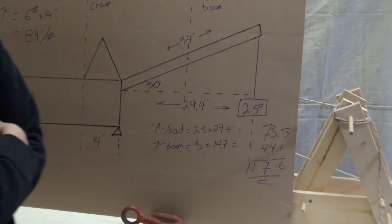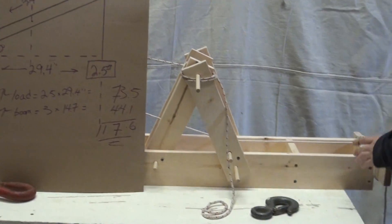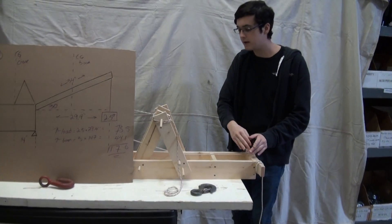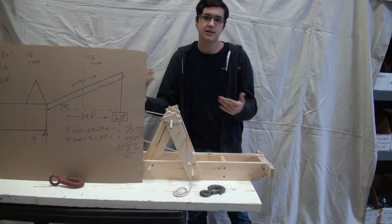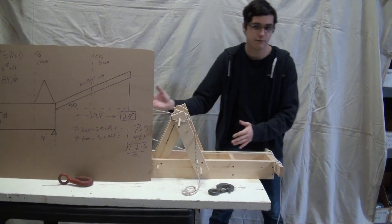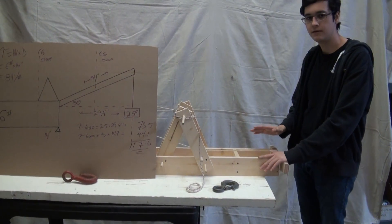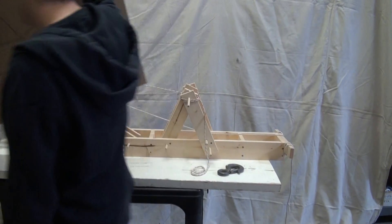Where would we add this counterweight? Well, we'd want to add it as far back as we can to increase the distance, because if I add a weight right on the pivot point, that's not going to do much. But if we add it further away, that's much more torque for the same force.